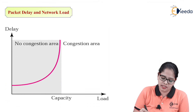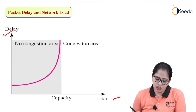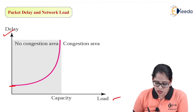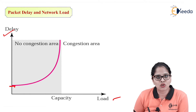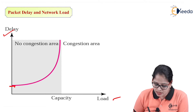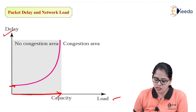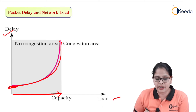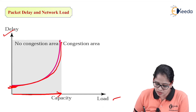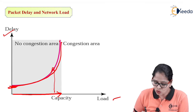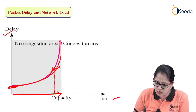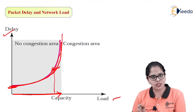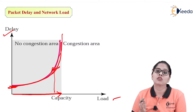Looking at the delay versus load graph: when the delay was less, congestion was also less. As the load goes on increasing, delay also goes on increasing. Whenever the load was less, the delay was less, but as load increases, delay increases because of the waiting time.